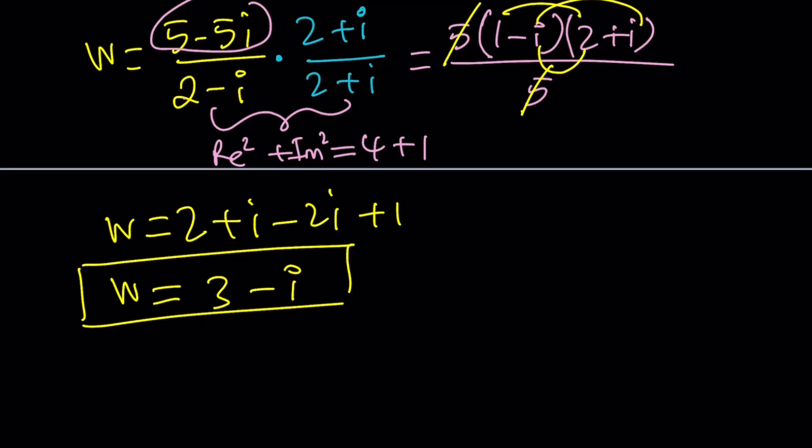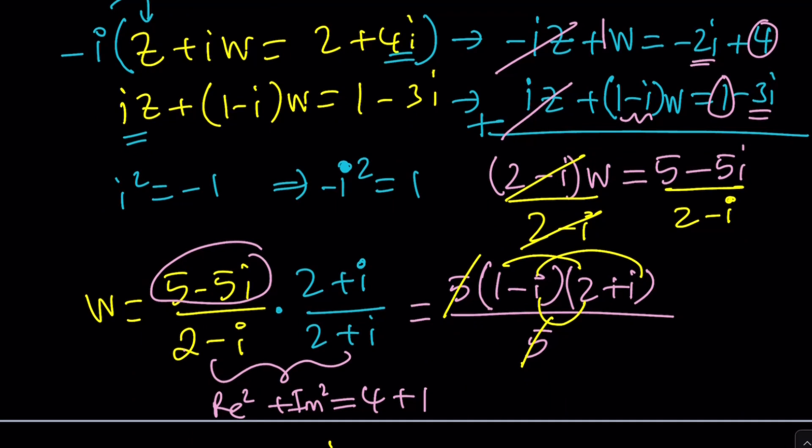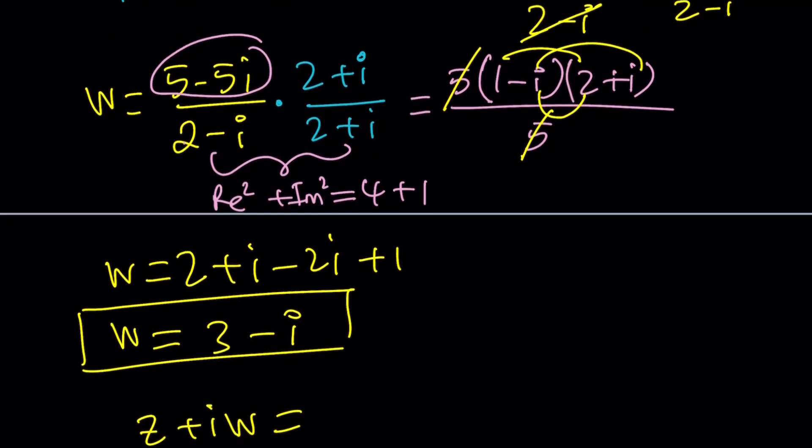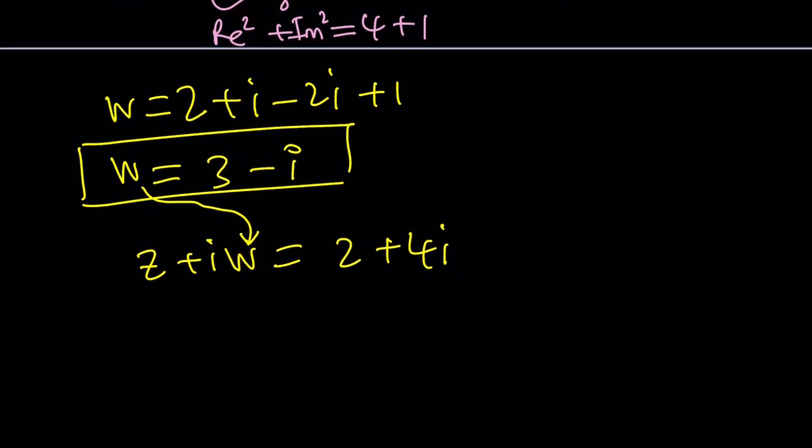So how do you find Z from here? Well, you could use substitution easily. Let's use the first equation. Z plus IW equals, from the first equation, 2 plus 4I. And I know that W is equal to this. So we can go ahead and just plug it in and find Z from here.